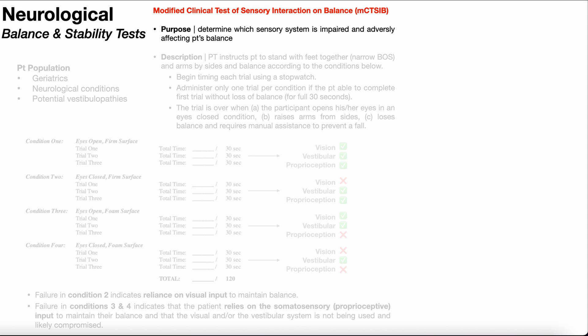Remember that the brain integrates information from three major systems to maintain balance. Number one is vision from the eyes. Number two, vestibular information from the inner ear. And number three, proprioceptive information, sometimes grouped with somatosensation. So vision, vestibular, and proprioception.